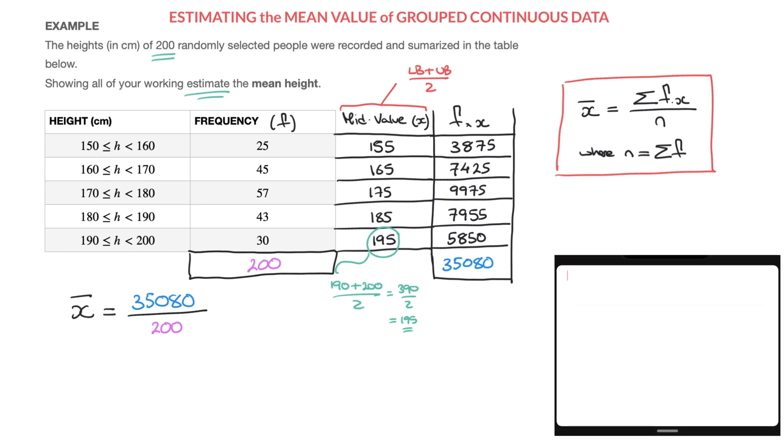Finally, with our calculators to estimate the mean, we simply calculate this. So that would be 35,080 divided by 200. And I click on Enter, and there we go. So an estimate of the mean height of these 200 randomly selected people is 175.4 centimeters.